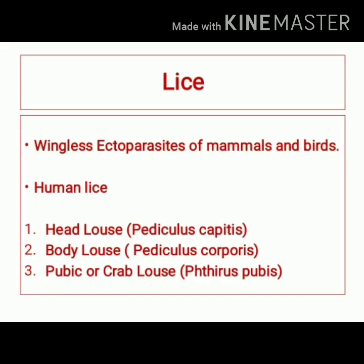Lice are small, wingless ectoparasites of mammals and birds. There are three different types of lice which can infest humans. These are known as head louse or Pediculus capitis, body louse or Pediculus corporis, and the third type is pubic louse or crab louse, also known as Phthirus pubis. Infestation with head louse is known as pediculosis capitis, and infestation with body louse is known as pediculosis corporis, or simply infestation with louse is known as pediculosis.